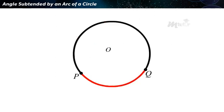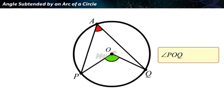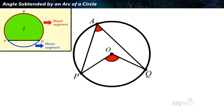Let PQ be an arc and let A be any point on the circle. Then the angle subtended by the arc at the center, namely POQ, is double the angle subtended by it at any point on the remaining part of the circle, say PAQ. Recall that the region between a chord and either of its arcs is called a segment of the circle.